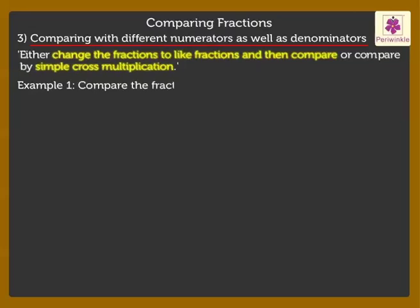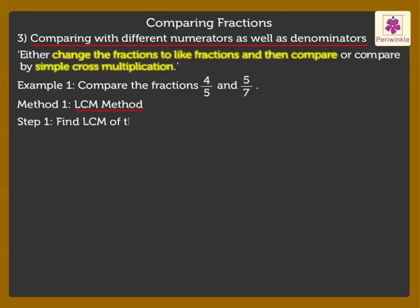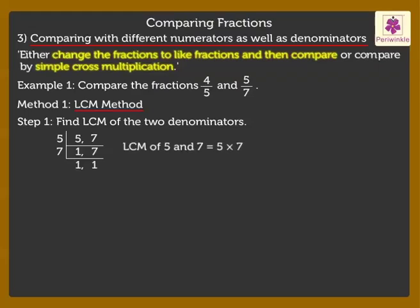Let us compare the fractions 4 upon 5 and 5 upon 7 using the LCM method. Step 1: Find the LCM of the two denominators. Thus we get the LCM as 5 into 7, which is equal to 35.